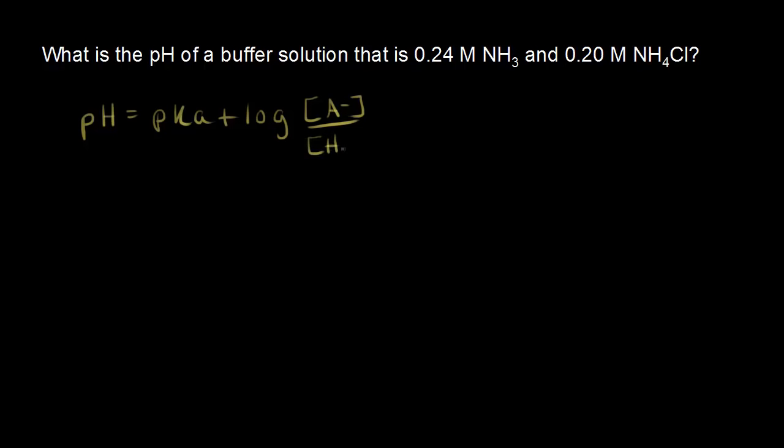We're talking about a conjugate acid-base pair here, HA and A minus. For our problem, HA — the acid — would be NH4 plus, and the base, A minus, would be NH3, or ammonia.